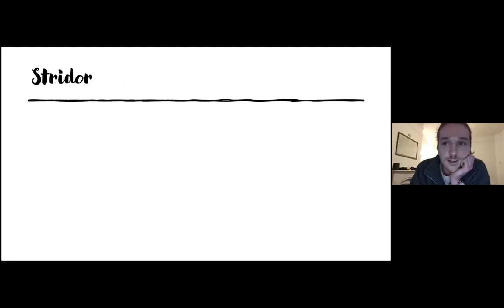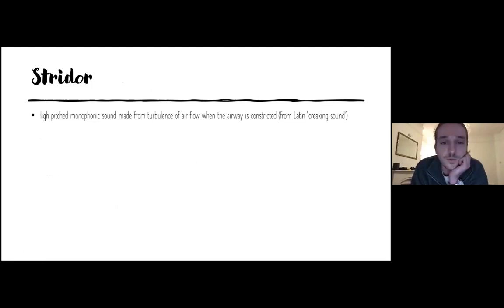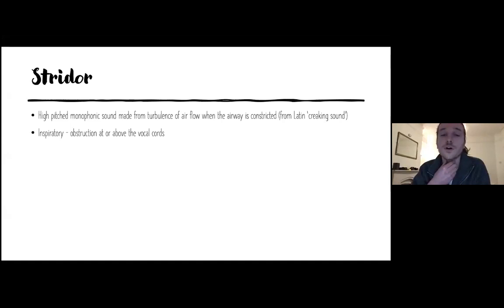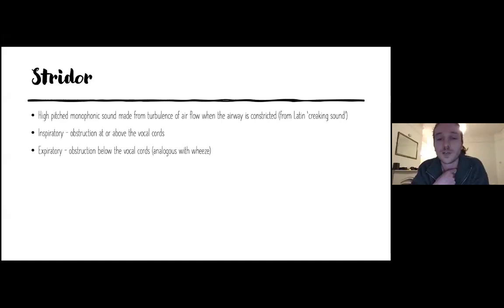Stridor is a high-pitched monophonic sound made from turbulent airflow in the airways when they're constricted — it comes from the Latin for a creaking sound. The most commonly described stridor is an inspiratory stridor, occurring when you have an obstruction at or above the level of the vocal cords. If you know where your thyroid prominence is in your neck, at that level is where your vocal cords lie — obstruction there or above produces stridor.